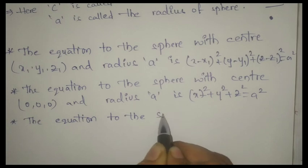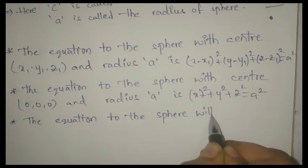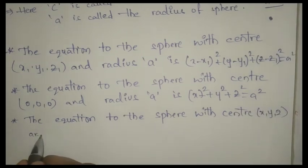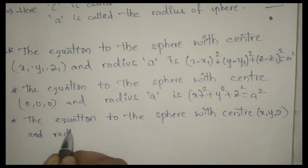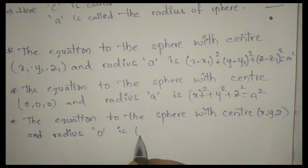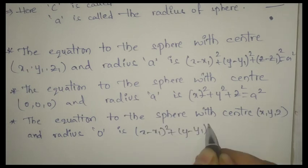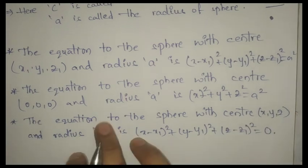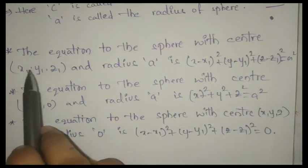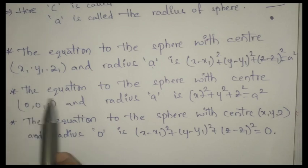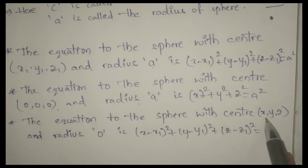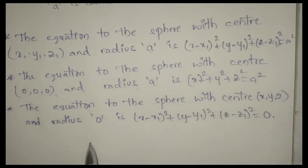The third formula: the equation of the sphere with center (x1, y1, z1) and radius zero. If the radius is 0, then we get: (x − x1)² + (y − y1)² + (z − z1)² = 0. These are the three equations of the sphere — with center (x1,y1,z1) and radius a; with center (0,0,0) and radius a; and with center (x1,y1,z1) and radius 0.